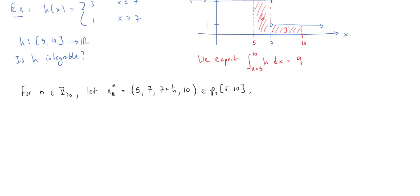Since I'm trying to show that h is integrable, I need to show that the lower and upper integrals are equal, but each of those is defined in terms of lower sums and upper sums. Let me compute the upper sum for h on this particular partition x_n.